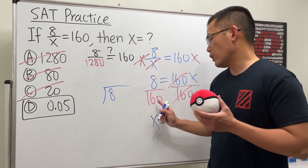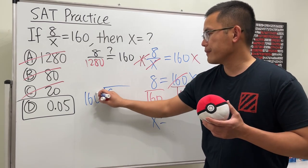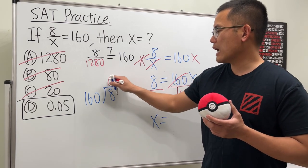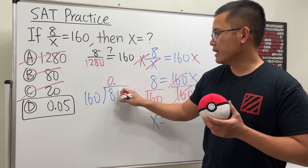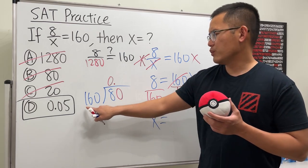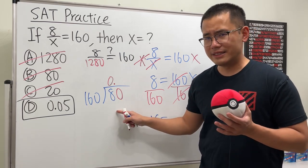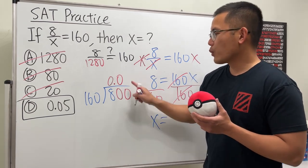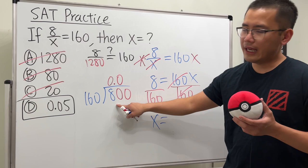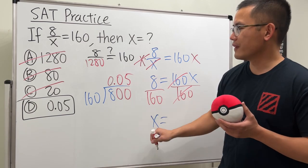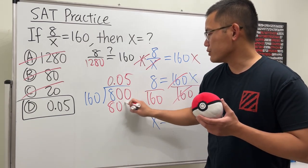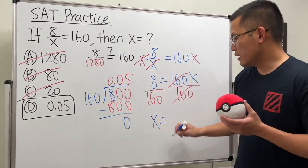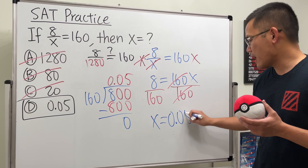And we can do a long division real quick. 8 on the inside, 160 on the outside. And then you see, 160 goes into 8 zero times, and then put decimal point and then just put zero. And 160 goes into 80 zero times, and then put another zero. Lastly, what times 160 is equal to 800? And the answer for that is 5. 5 times this is 800, so subtract, remainder zero. So that means the answer is 0.05.